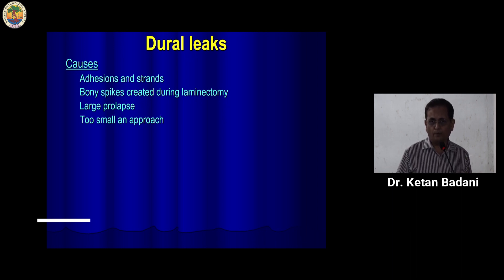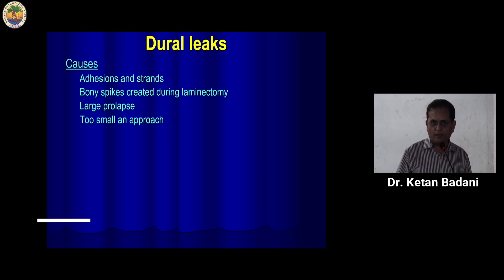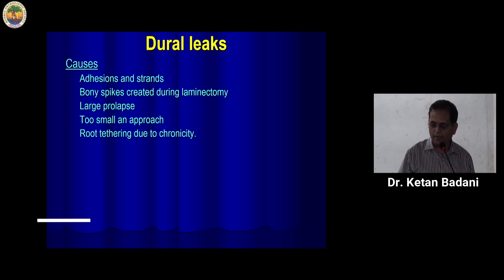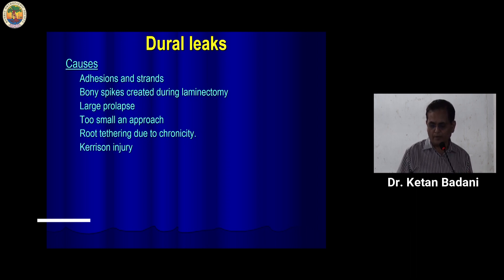Too small an approach is also a factor. I always emphasize that adequacy of exposure and more respect to the neural structures is more important than saving 2 mm of lamina, because that will reduce the incidence of dural tears. In chronic cases with root tethering, if you try to retract, you can get dural tears.